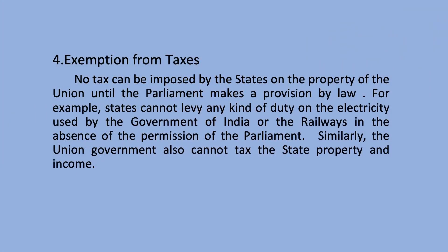Exemption from taxes: no tax can be imposed by the states on the property of the union until the parliament makes a provision by law. For example, states cannot levy any kind of duty on the electricity used by the Government of India or the railways without the permission of parliament. Similarly, the union government also cannot tax state property and income. Both union and state governments have been given exemptions by each other in terms of taxation.